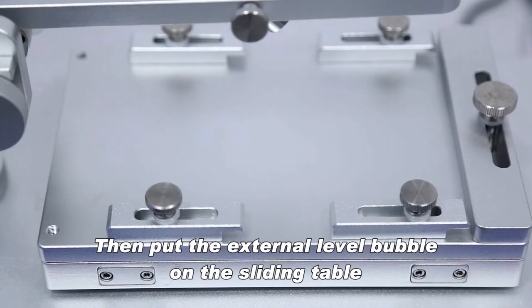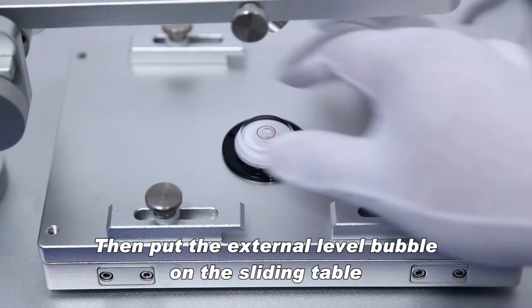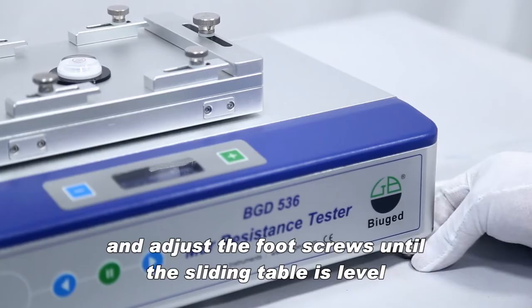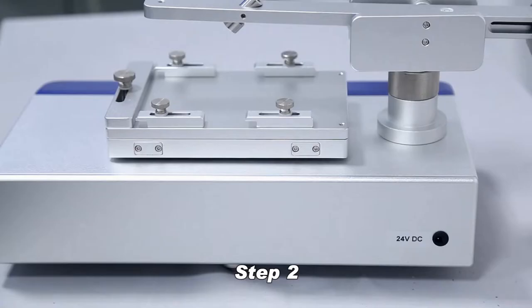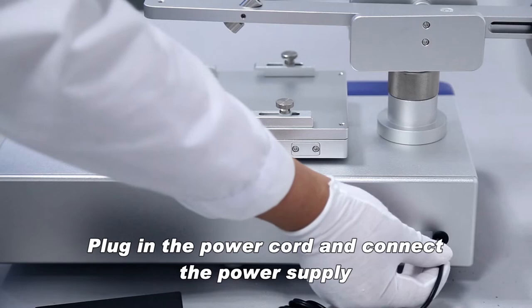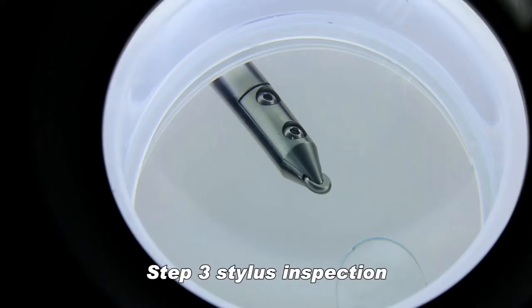Place the instrument on a stable and level bench, then put the external level bubble on the sliding table and adjust the foot screws until the sliding table is level. Plug in the power cord and connect the power supply.